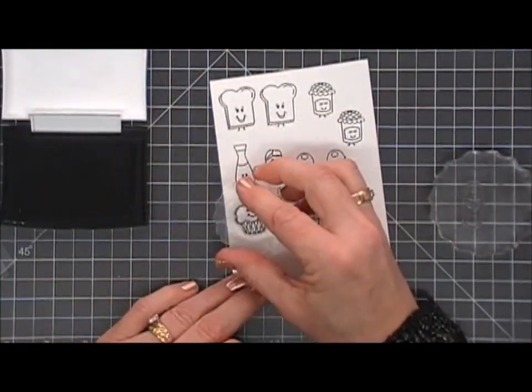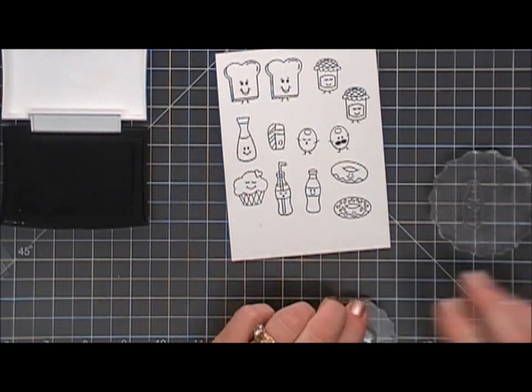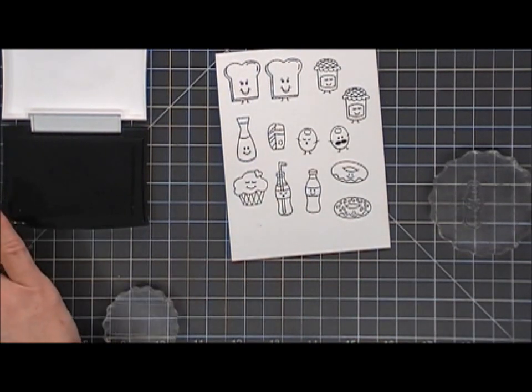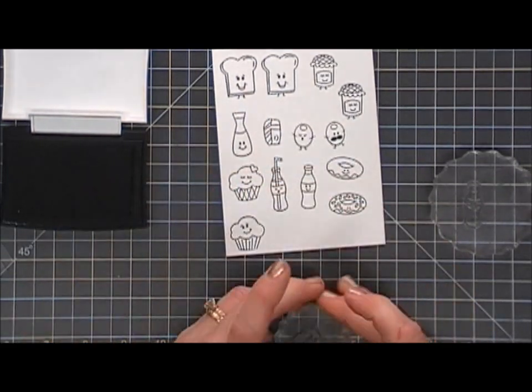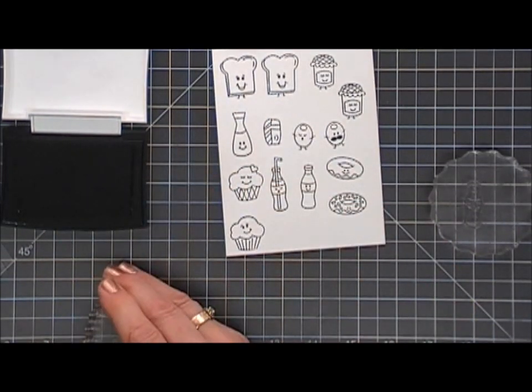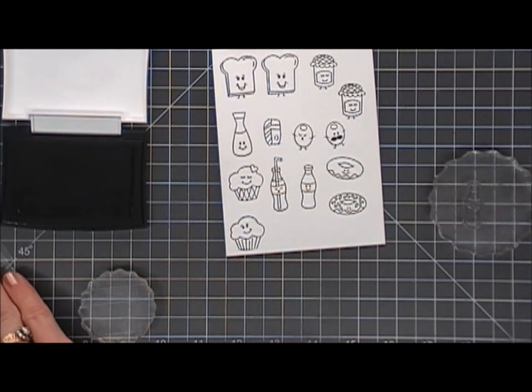We're just going to stamp all the images with VersaFine ink. Now I think this is more like a Valentine's Day themed stamp set, but with the food images in it and the sentiments I thought they would be so cute to put in the lunch boxes.